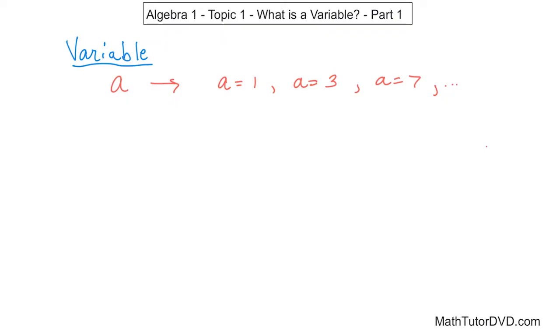So as another example, we might have the variable X. It's another very common variable you see in Algebra all the time. X could be equal to zero. X could be equal to one. X could be equal to two, and so on. And you can see the idea here. I'm just making numbers up. They don't have to be these specific numbers. Any number at all can fit inside of this variable that we're calling X.